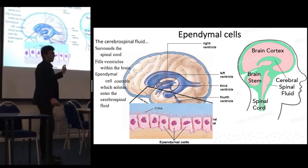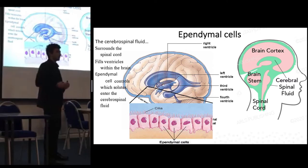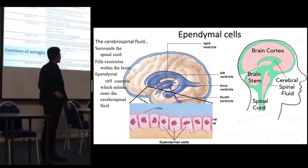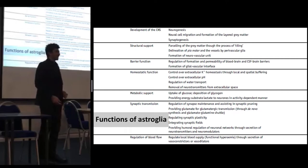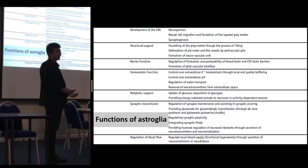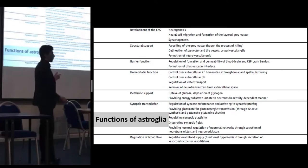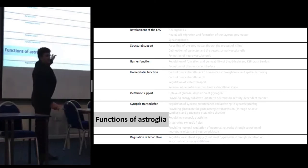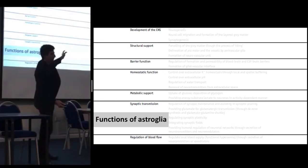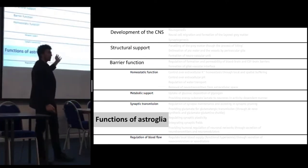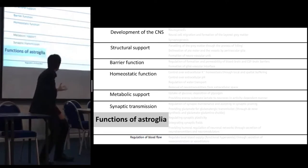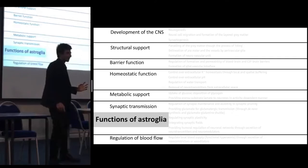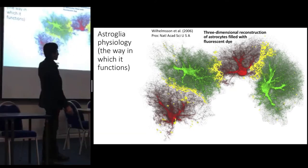The cerebrospinal fluid fills the ventricles and surrounds the spinal cord, providing a cushioning function. There are so many functions of astroglia — as many as their morphologies. This is only half of the actual functions table, and I haven't even included the roles of astrocytes in higher functions of the brain such as sleep, memory, or circadian rhythms. Let's focus on structural support, battery function, homeostatic function, metabolic support, synaptic transmission, and regulation of blood flow.